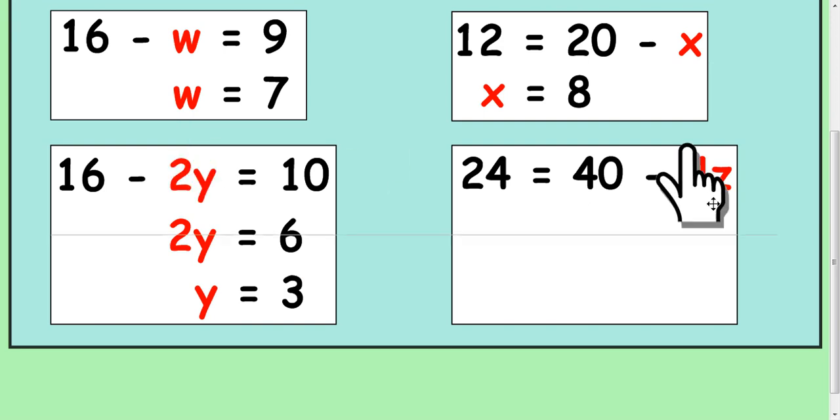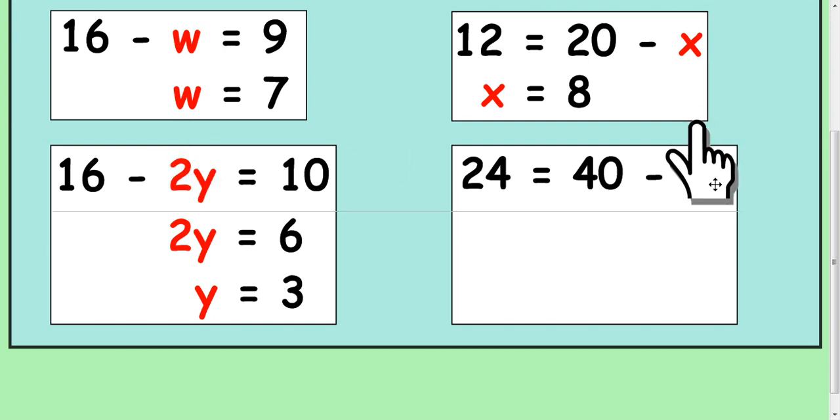And lastly, cover up the 4z. And try and work out what the 4z is going to equal. So, 40 take away what is 24. You get 16. So, 1z is equal to, and we divide by 4. So, 4.